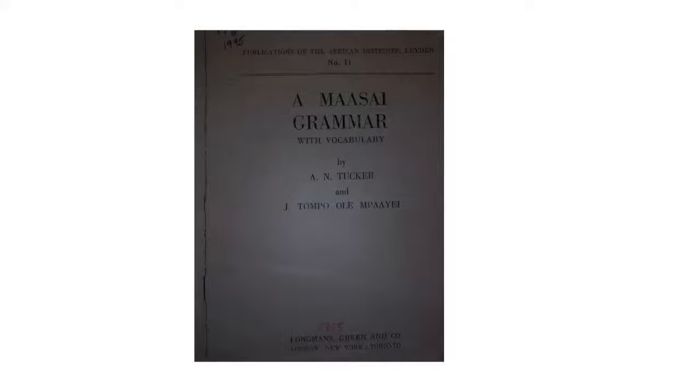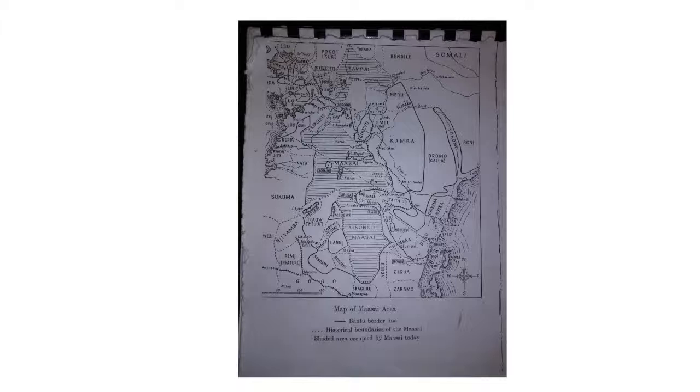In 1955, Archibald Tucker and John Olempaye published a Maasai grammar with vocabulary. Interestingly, there are a couple of maps at the beginning of that grammar and some claims that have been repeated many times that I think are not quite correct. That said, this is an absolutely marvelous grammar, and for a certain variety it is 99.9% correct as of 2010 or so.